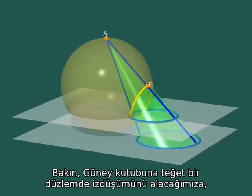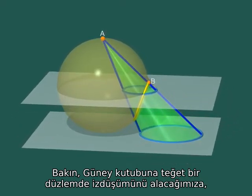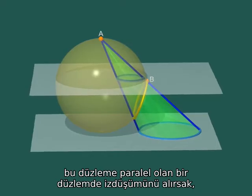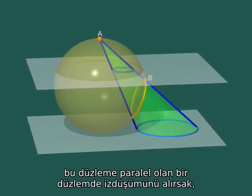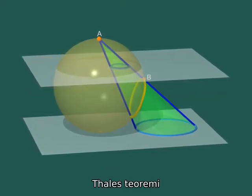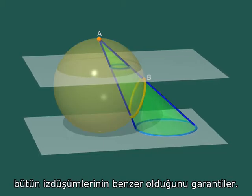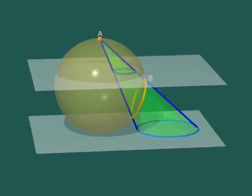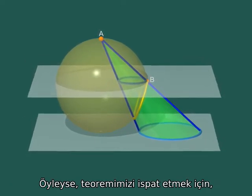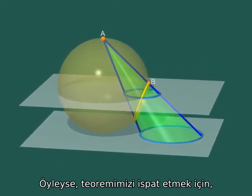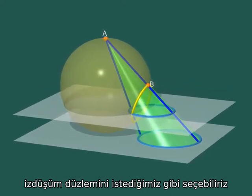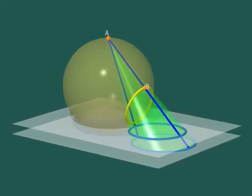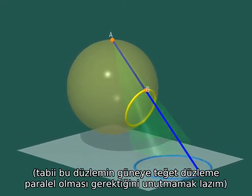Look, if instead of projecting onto the tangent plane to the South Pole, we projected onto some other parallel plane, the famous theorem of Thales would imply that all the projections are similar. Hence, in order to prove our theorem, we may choose the projection plane as we wish, of course, as long as it is parallel to the tangent plane to the South Pole.